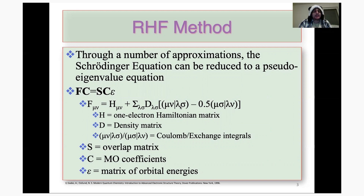Each of these terms has different meaning. F is the Fock matrix, which is a mathematical description of all the one- and two-electron interactions within the system. The one-electron interactions are modeled by H, the one-electron Hamiltonian matrix, whereas the two-electron interactions are given by a summation involving D, the density matrix, as well as four-index terms referred to as the two-electron integrals or the Coulomb and exchange integrals — those make up the bottleneck of the entire Hartree-Fock calculation. S refers to the overlap matrix, C refers to the molecular orbital coefficients from the basis set selected, and epsilon is the matrix of orbital energies.